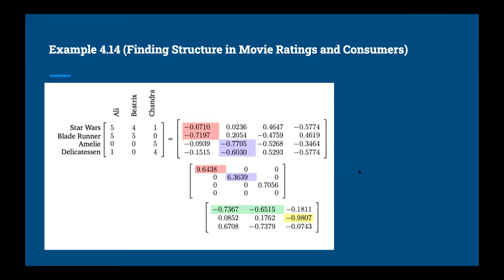This is example 4.14 from the book: finding structure in movie ratings. We have three people — Ali, Beatrice, and Chandra — who gave ratings to four movies: Star Wars, Blade Runner, Amelie, and Delicatessen. The book tries to convince us that you can find structure using SVD. Ignoring the colors first, the three matrices are computed instantly by the SVD command: a 4 by 4 matrix, a 4 by 3 middle matrix, and a 3 by 3 matrix.